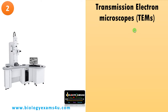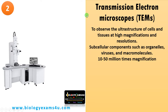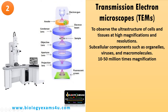Second in the list is the transmission electron microscope (TEM). It is used to observe the ultrastructure of cells and tissues at high magnifications and resolutions — even subcellular components, viruses, and macromolecules can be viewed, providing up to 10 to 50 million times magnification. The electron gun forms an electron beam passed through the sample; transmitted electrons create an image on a fluorescent screen — unlike SEM, which uses secondary scattered electrons.